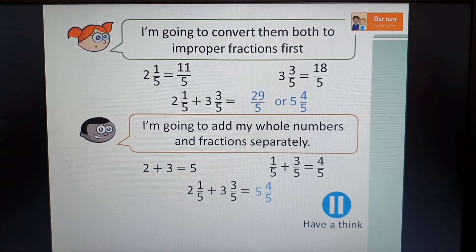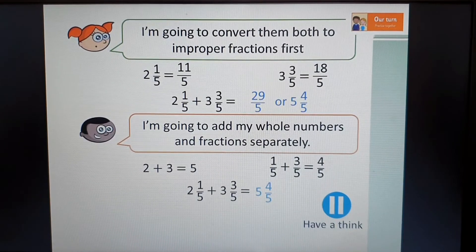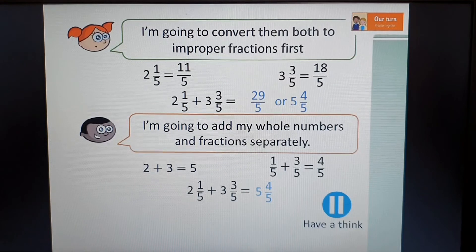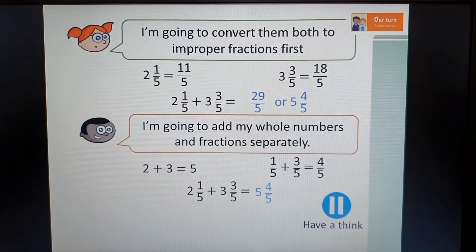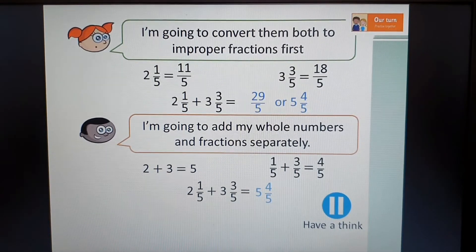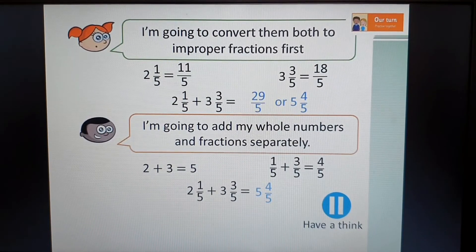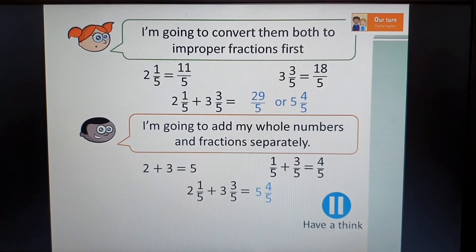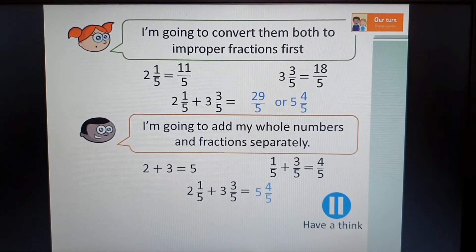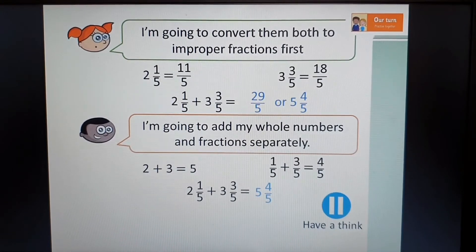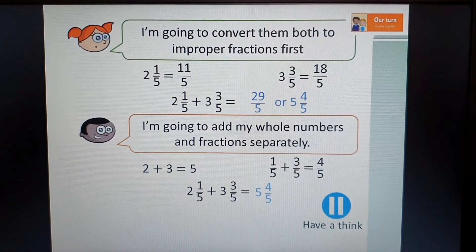So this is a tip. There's two different ways to do this. The top person said, I'm going to convert them both into improper fractions first. And the bottom says, I'm going to add my whole numbers separately and my fractions separately. I want you to pause the video and have a think about which way you prefer to do it. It's up to you which method you choose. Both of them got the same right answer.